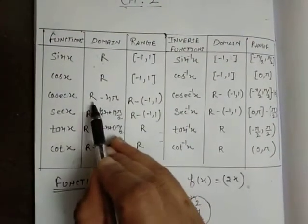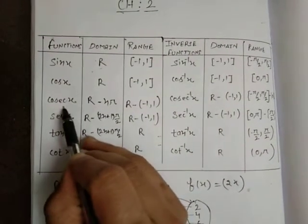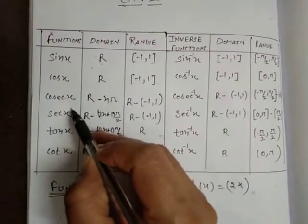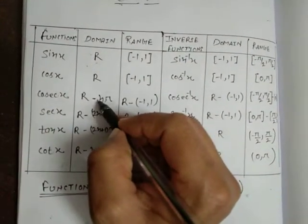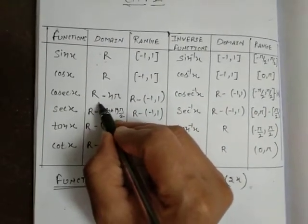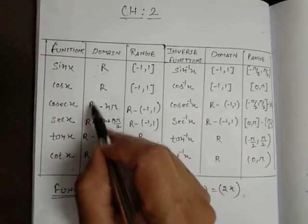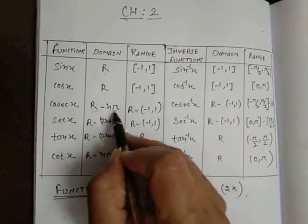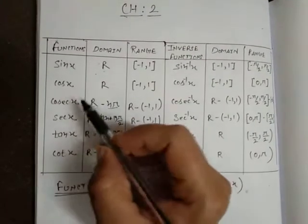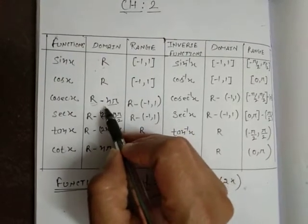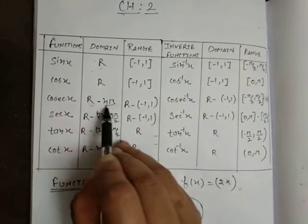Students have a problem: why have I written R minus nπ here? You know that cosecant x is 1 upon sin x. We have to remove all those values which make this 0, because if 0 comes in the denominator, the function will not be defined. So from real numbers, we subtract all those values — these are the even multiples — so 1 upon sin x will not have 0 in the denominator, and cosecant x will be defined. That is why R minus nπ is given here.